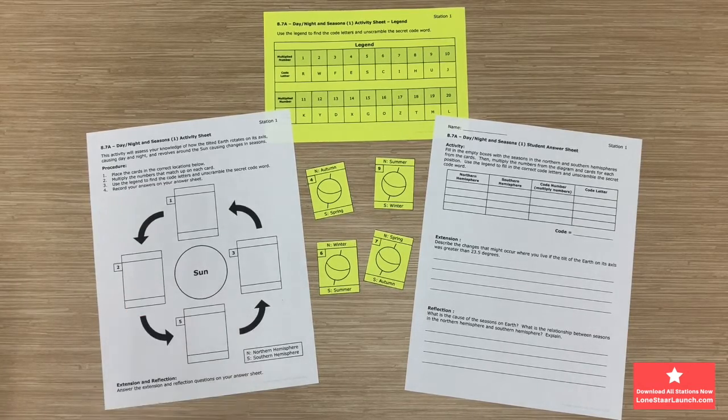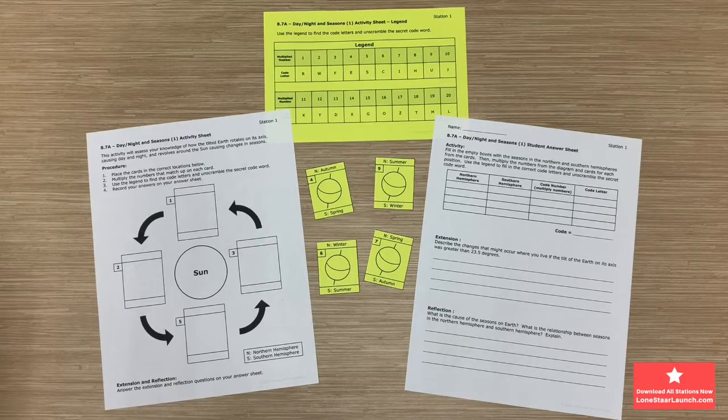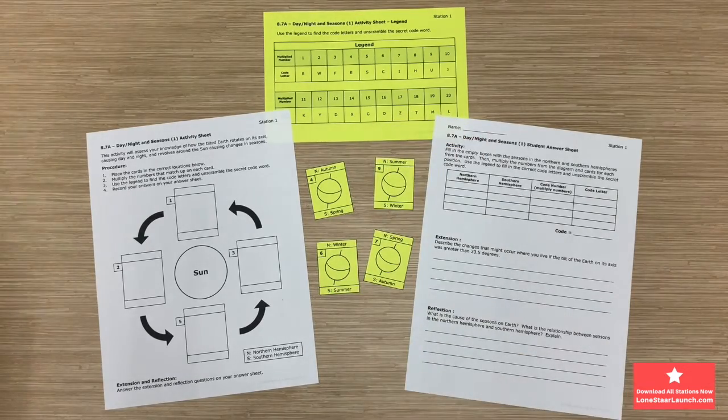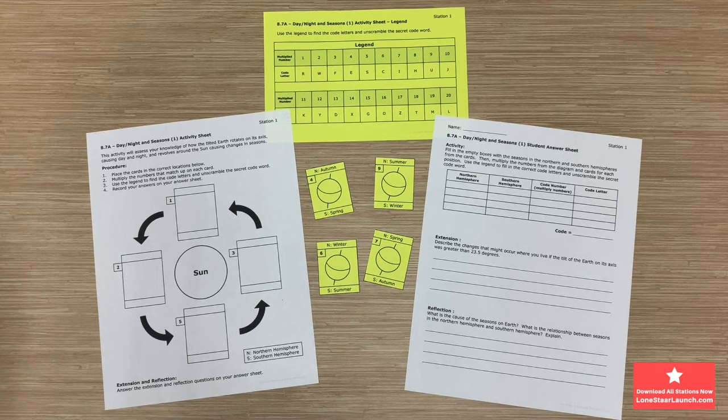On the left hand side you'll see the activity sheet that will stay with the station the entire time. You'll also have some seasons cards and a legend that go with it. These seasons cards came from the teacher only sheet. We recommend cutting these out on colored paper as you can see here.